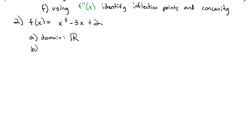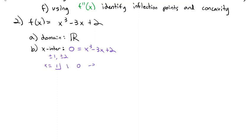To find x-intercepts, we set the whole thing equal to 0: x³ - 3x + 2 = 0. I'm going to use the rational root theorem and synthetic division. The options are ±1 and ±2. Let's try x = 1, using 1, 0, -3, 2 — don't forget the 0 for the x² term. Bring down the 1: 1 times 1 is 1, giving -2 and then 0. So x = 1 is a zero.